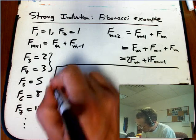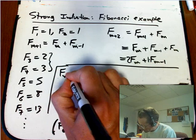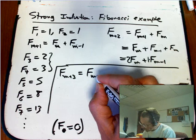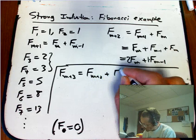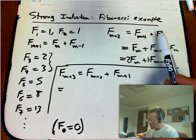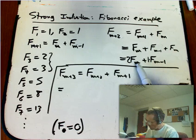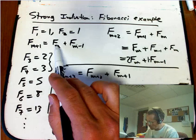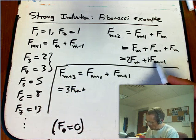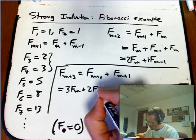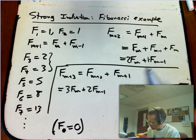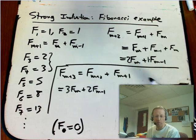Now let's look at F sub M plus 3. So that's F sub M plus 2 plus F sub M plus 1. Oh hey, I've got exactly that information already on the board. That's 2 F sub M's plus 1 F sub M. That's a 3 F sub M. And then 1 F sub M minus 1 plus 1 F sub M, that's 2 F sub M minus 1. So far, mildly interesting. We're getting coefficients of 1, 2, 3, yeah, big deal.